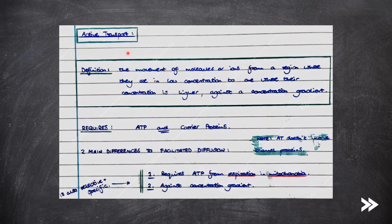Finally, we have active transport. Active transport is the movement of molecules or ions from a region where they are in low concentration to one where their concentration is higher against a concentration gradient. This is basically the opposite of diffusion.